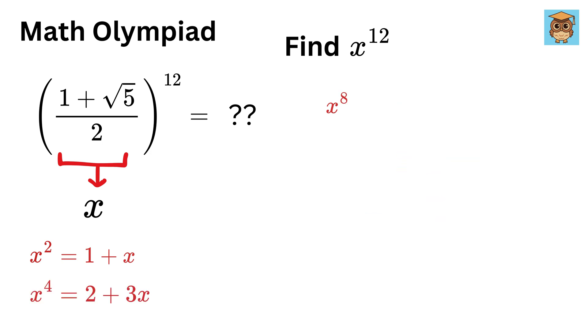Now let us find x⁸. It can be written as (x⁴)². Substitute the value of x⁴, so we get (2+3x)², which is 2² + (3x)² + 2(2)(3x). This will be 4+9x²+12x.